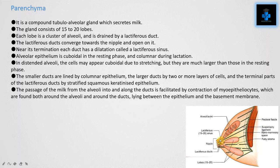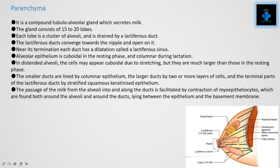Alveolar epithelium is cuboidal in the resting phase and columnar during lactation. In distended alveoli, the cells may appear cuboidal due to stretching, but they are much larger than those in the resting phase. The smaller ducts are lined by columnar epithelium, the larger ducts by two or more layers of cells, and the terminal parts of the lactiferous ducts by stratified squamous keratinized epithelium. The passage of milk from the alveoli into and along the ducts is facilitated by contraction of myoepithelial cells, which are found both around the alveoli and around the ducts, lying between the epithelium and the basement membrane.